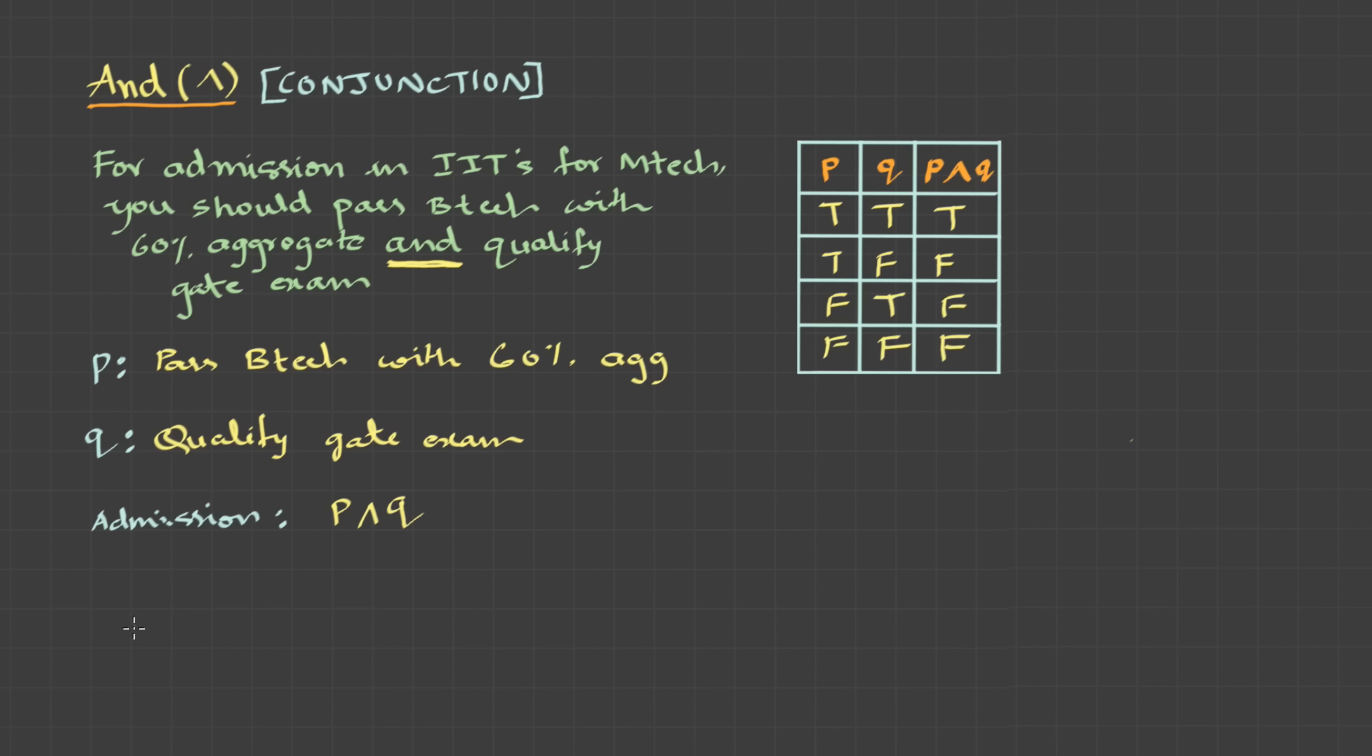So let's write a key statement to memorize this. Conjunction is true only when both P and Q are true. So in all other cases, whenever you find a false, then you can simply mark it false. So that was about propositions, negative statements, and the first connective AND. In the next video, we will be covering other connectives.